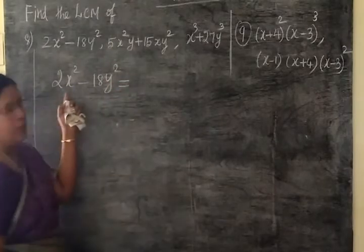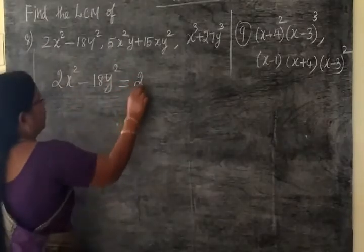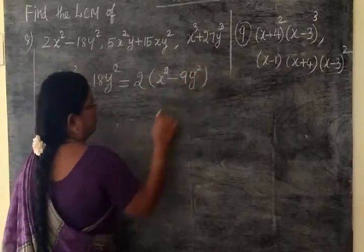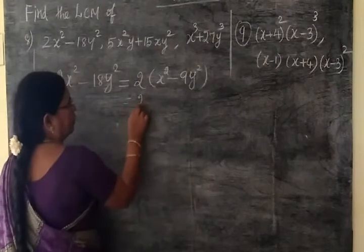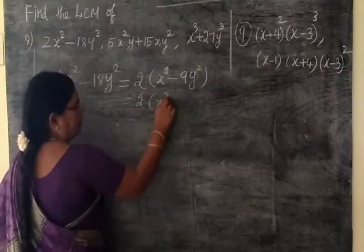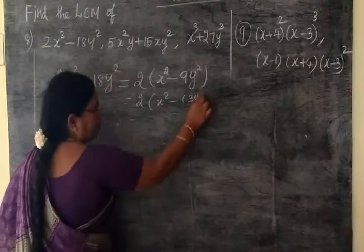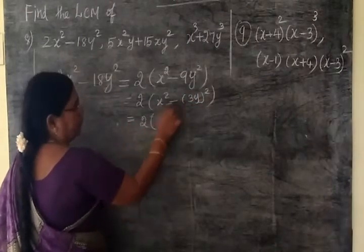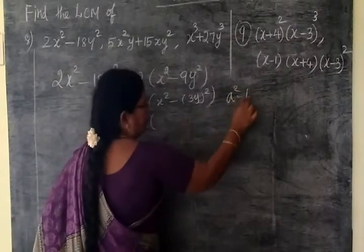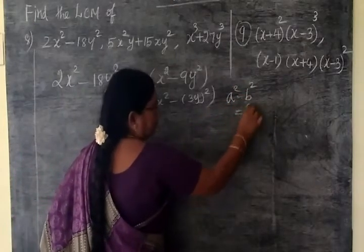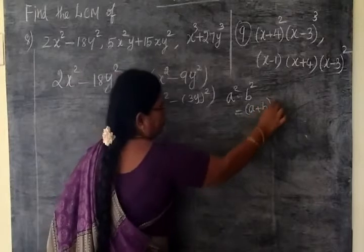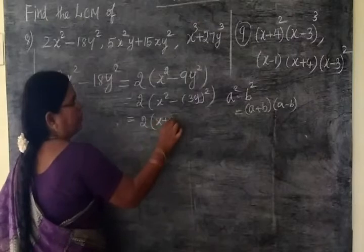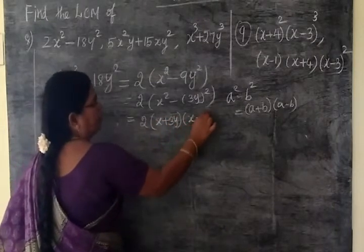2x² - 18y². Here we contain 2 type of corner. Now 2 of corner is ready. x² - 9y². We will see for this 2 bracket. x² - 9y² is (3y)². Equal to 2 bracket. a² - b² is equal to (a + b)(a - b). So this is the same way: (x + 3y)(x - 3y).